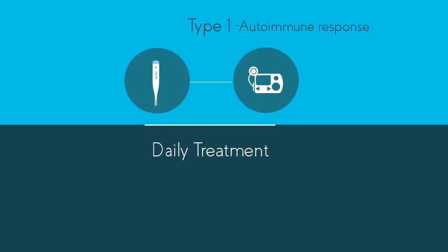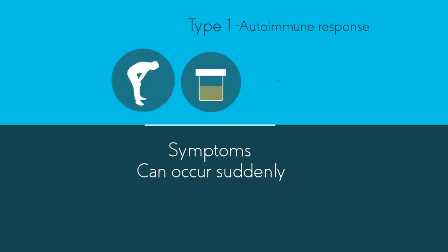The symptoms of type 1 diabetes are thirst, needing to regularly pass urine, tiredness and weight loss, and can occur very suddenly.